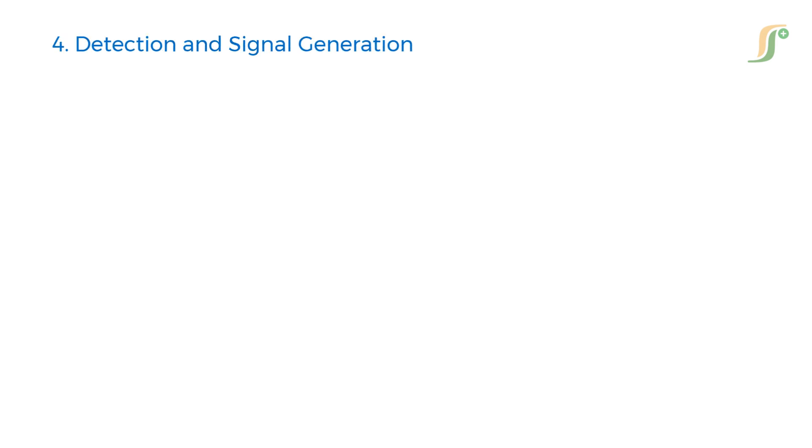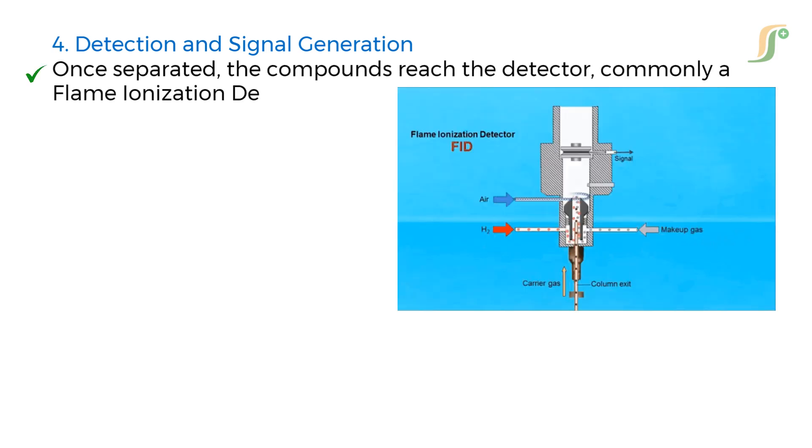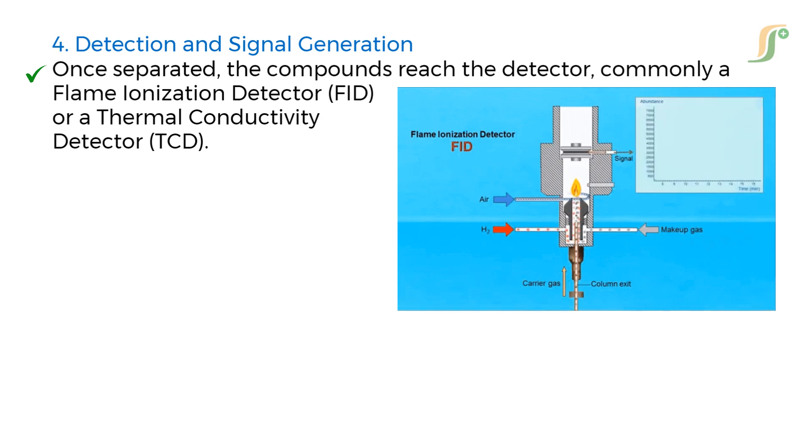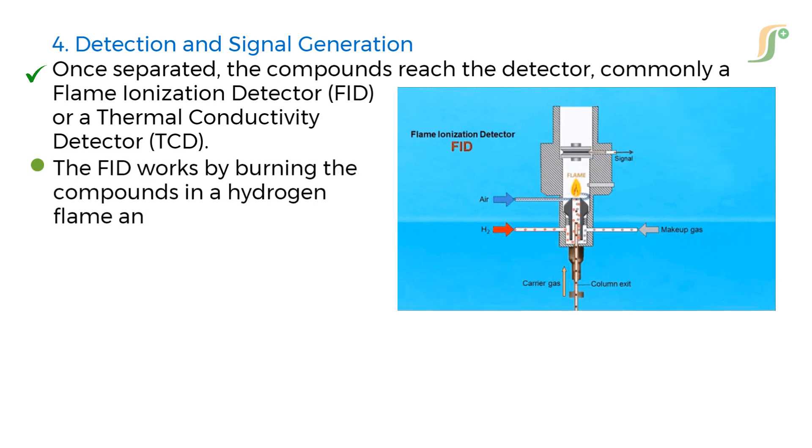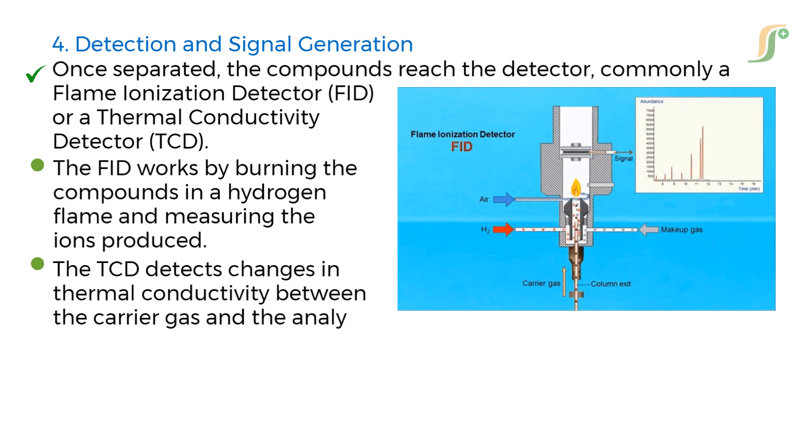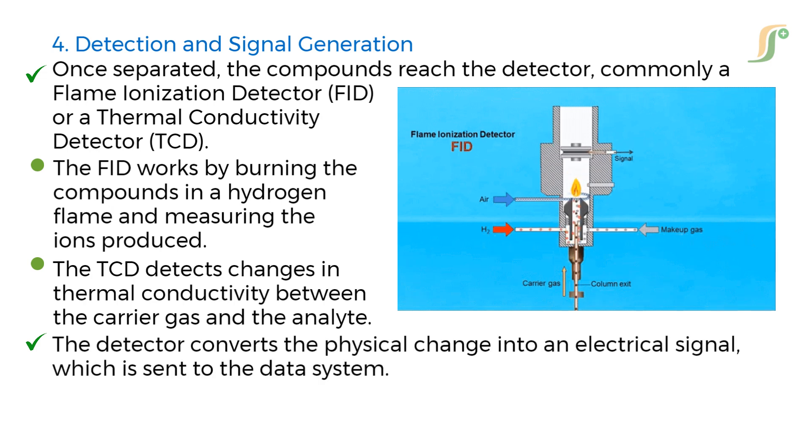Fourth step is detection and signal generation. Once separated, the compounds reach the detector, commonly a flame ionization detector, i.e. FID, or a thermal conductivity detector, i.e. TCD. The FID works by burning the compounds in a hydrogen flame and measuring the ions produced. The TCD detects changes in thermal conductivity between the carrier gas and the analyte. The detector converts the physical change into an electrical signal, which is sent to the data system.